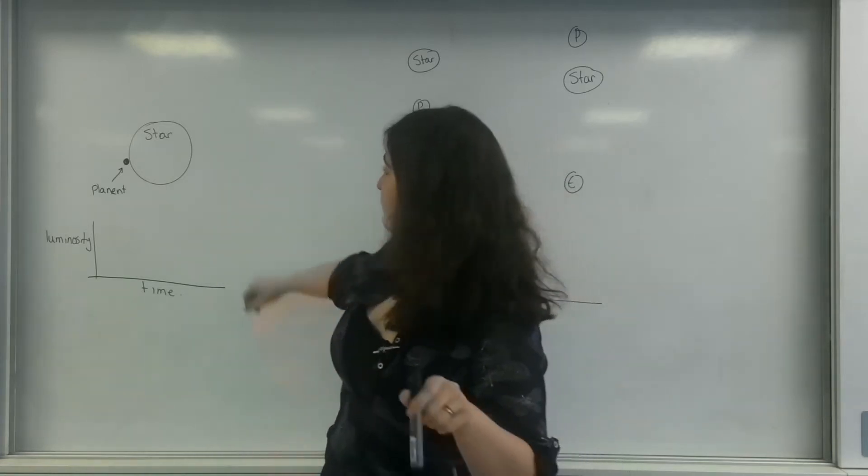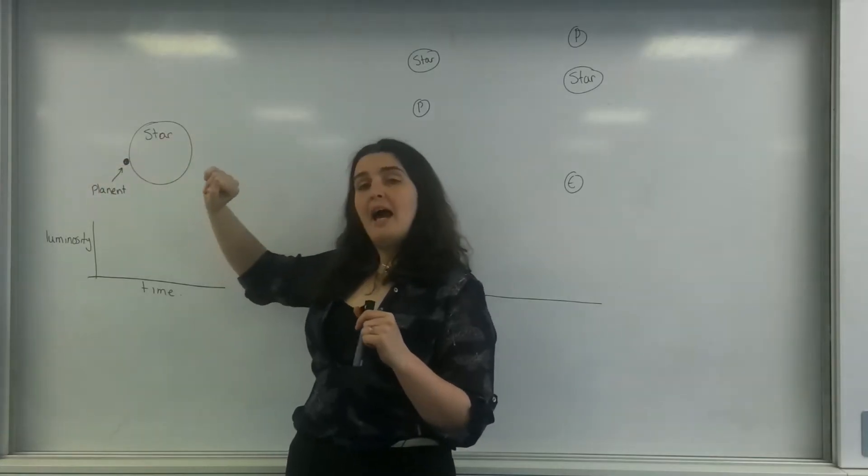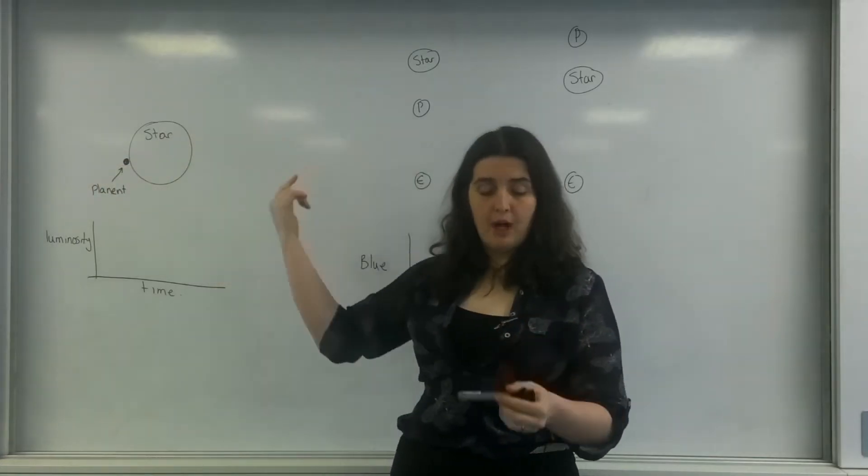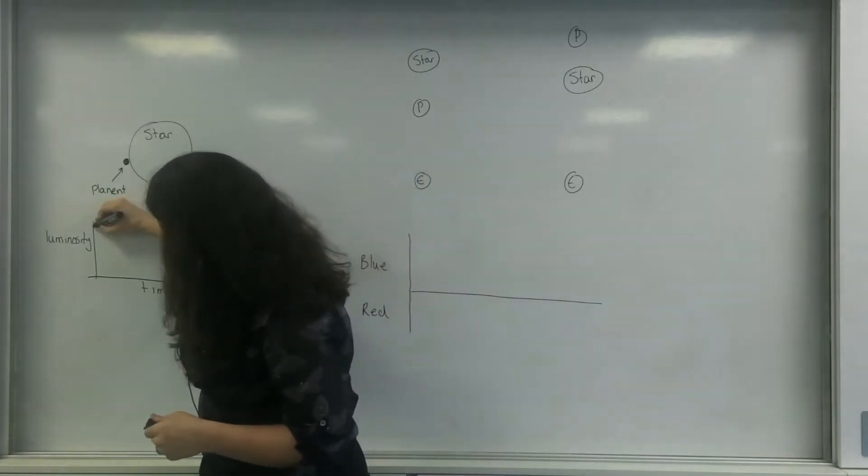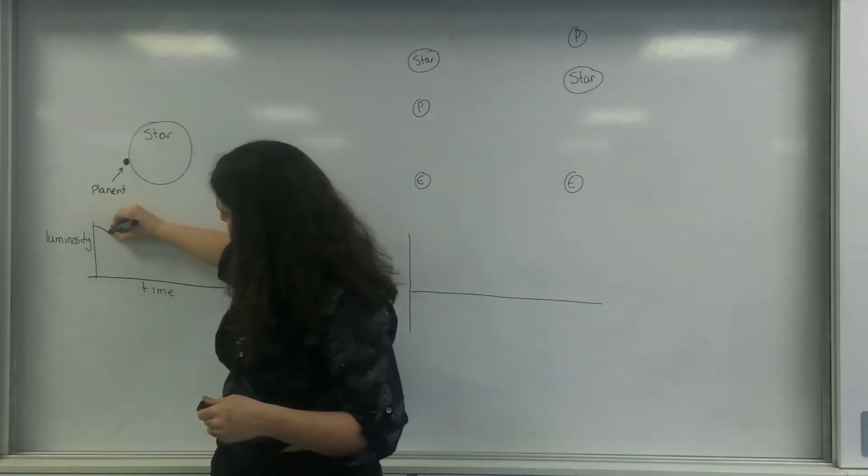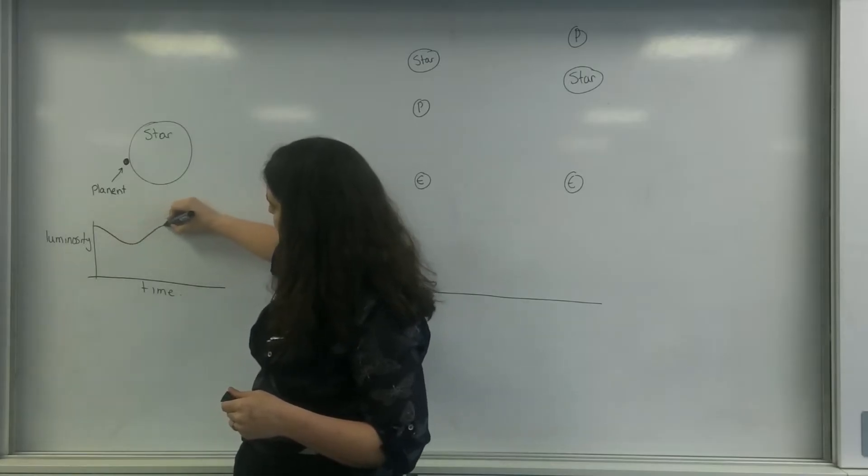So what I've got here is my star and this little planet that will go in front of the star, orbit around, and come back. So this is the star's luminosity, and then what will happen is the planet goes over it, that luminosity would dip and it will go back to the maximum.